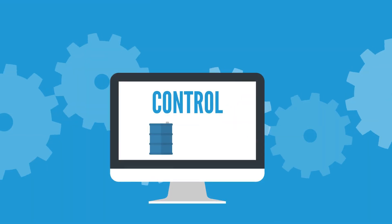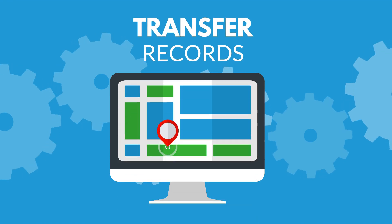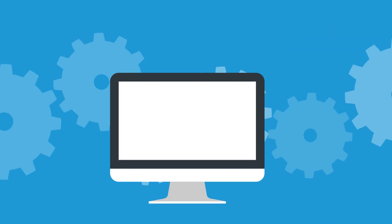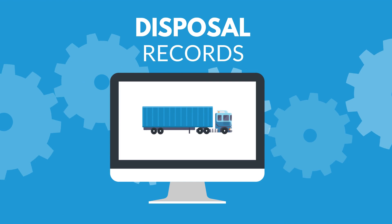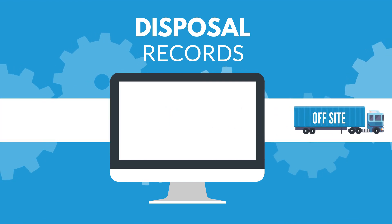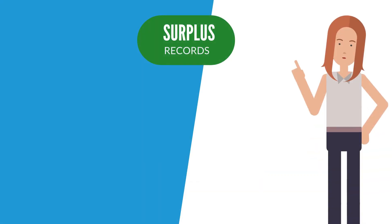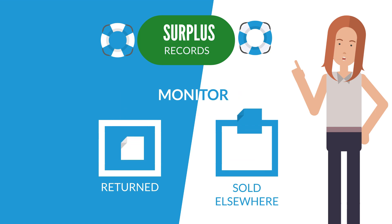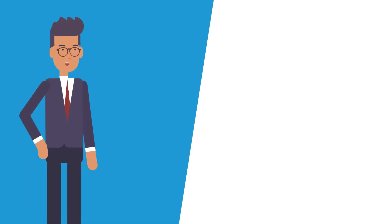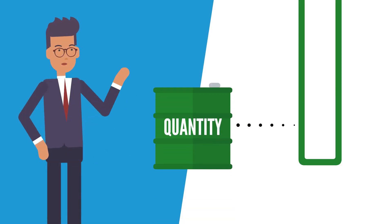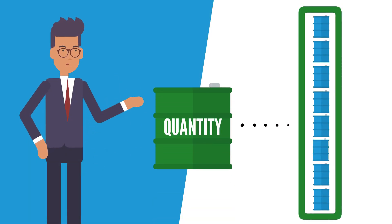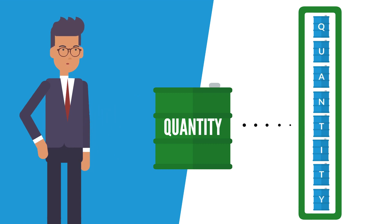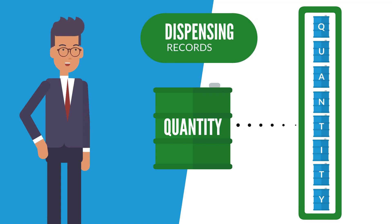Control the movement of your containers. Transfer records track when a container is moved between locations, while our disposal records are used if the container is marked as waste and must be disposed off-site. The surplus records functionality is a lifesaver by allowing me to monitor if too much of one product was ordered and can be returned or even sold elsewhere. And whenever I need to redistribute a quantity from a single container into one or more newly created subcontainers, I can do it with dispensing records.